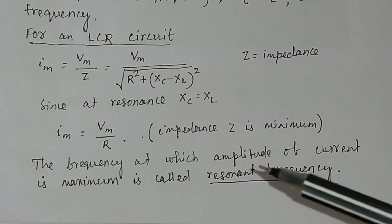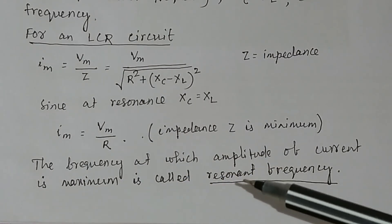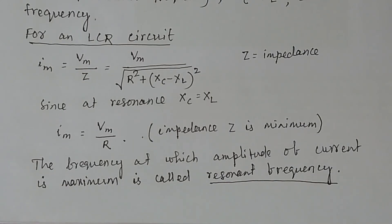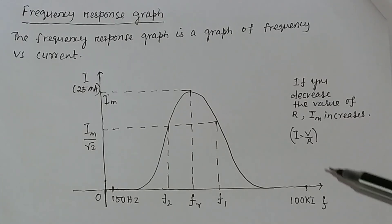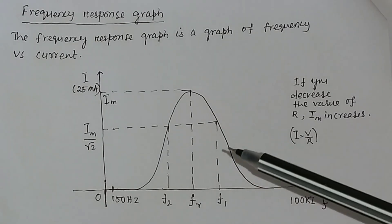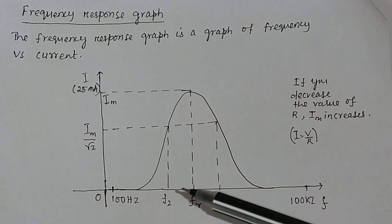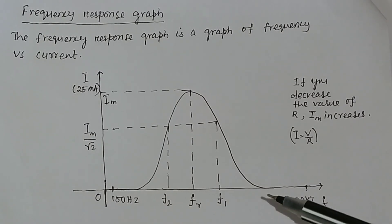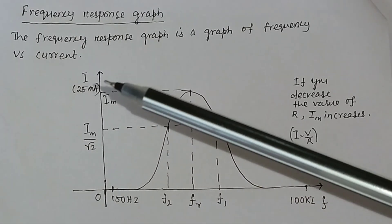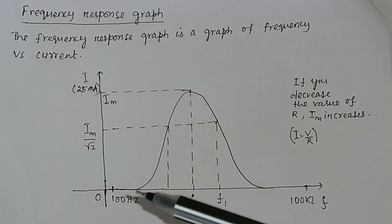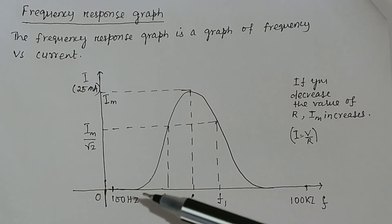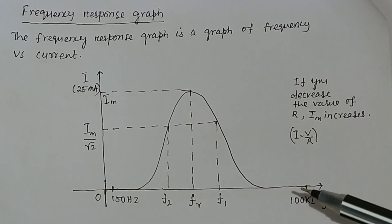The frequency at which the amplitude of current is maximum is called the resonant frequency. This is the frequency response curve for the series LCR circuit. You take frequency of the sine wave on the X-axis, and current on the Y-axis. The range of frequency in our experiment is from 100 Hz to 100 kHz.